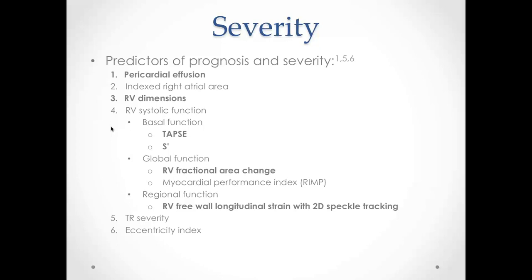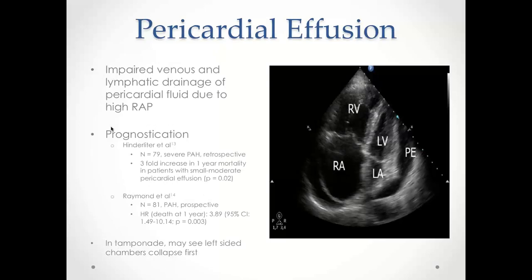Here is an example of a patient with severe pulmonary hypertension. We can immediately identify: severely enlarged right ventricle, D-shaped septum, significant RV enlargement with the RV dominating the apex, severe right atrial enlargement, underfilling of the left side of the heart, and a pericardial effusion.